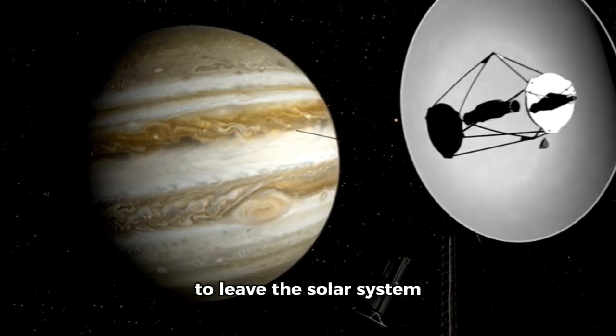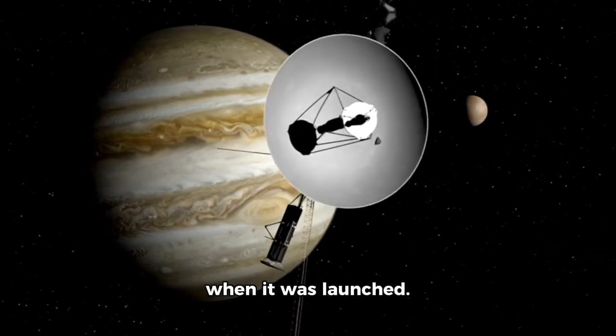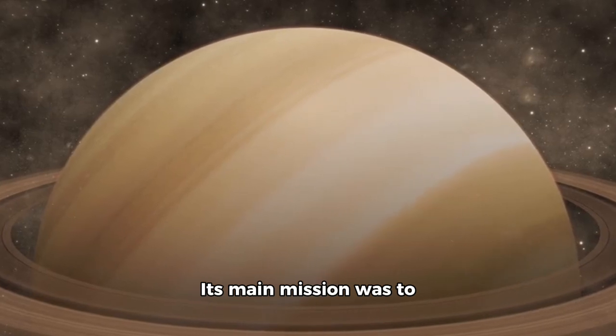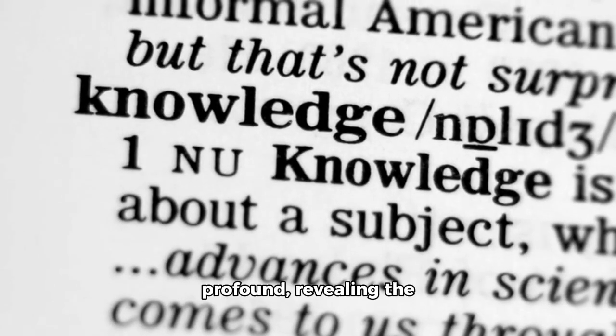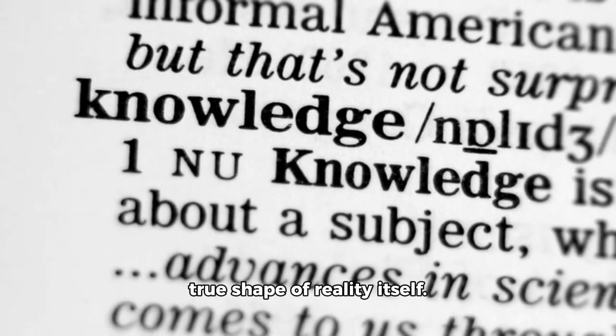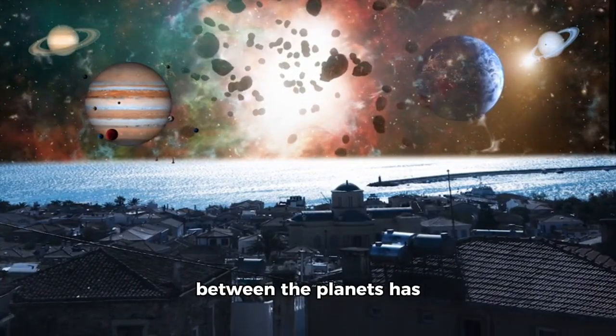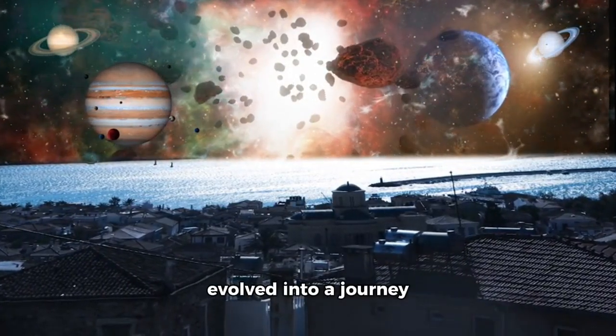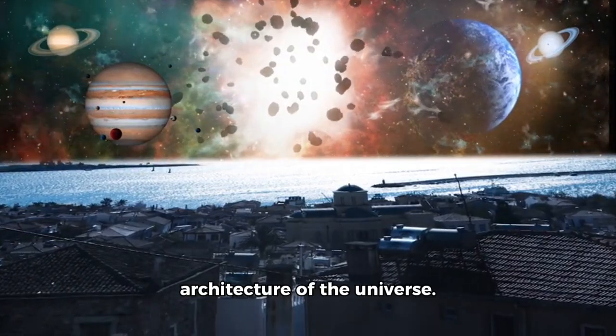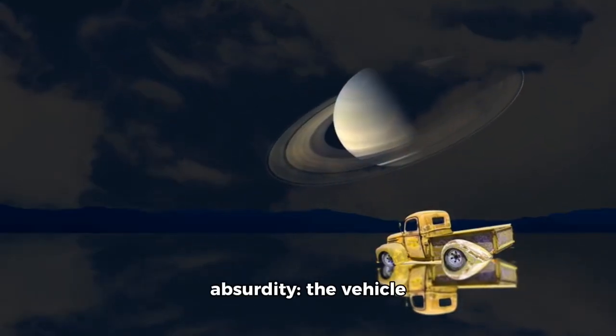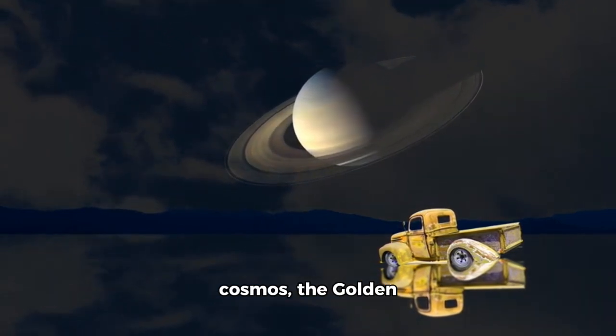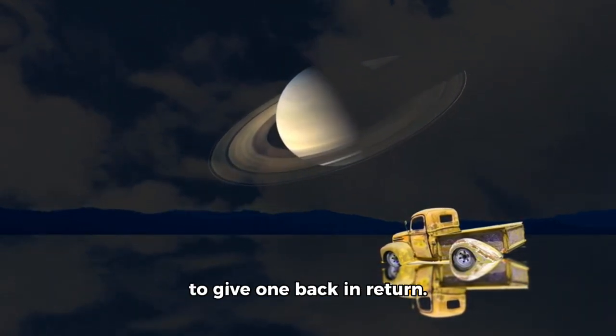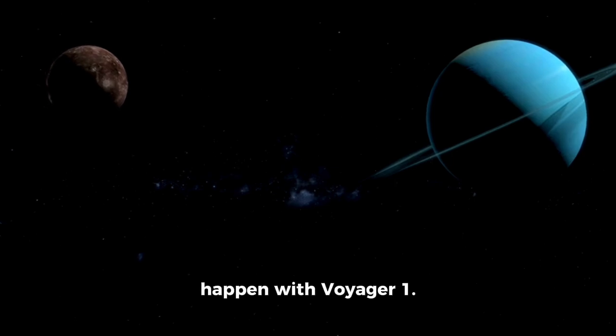Voyager was never intended to leave the solar system when it was launched. Its main mission was to observe the gas giants and then simply drift. However, now, over four decades later, it's doing something far more profound, revealing the true shape of reality itself. What began as a trip between the planets has evolved into a journey into the unknown architecture of the universe. And here's the absurdity. The vehicle that carries the message from humanity to the cosmos, the golden record, may be the first to give one back in return.